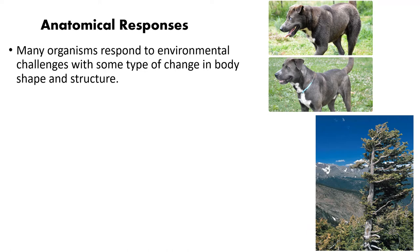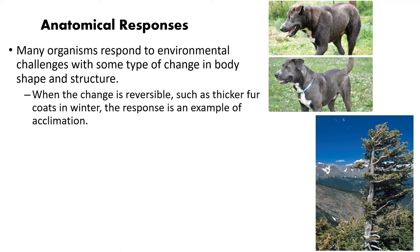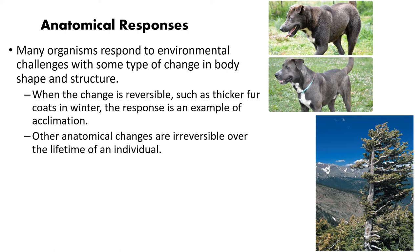A familiar example of an anatomical response is the seasonal change in a pet's fur. Dogs going into winter tend to have a thicker undercoat that helps keep them warm, then in summer they shed it and are left with just their top coat. This is a reversible change seen commonly in mammals — during different parts of the season you have different types of fur.